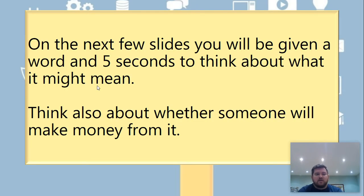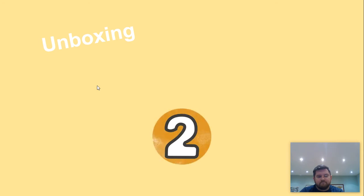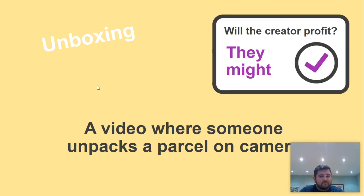On the next few slides I'm going to give you five seconds to think about the definition of each word — you don't have to write it down, just have a think. First: unboxing. An unboxing is a video where someone unpacks a parcel on camera. Do you think people would make money from them? They might — it could be that they're getting sent something for free to unbox. When I say money, it might not be financial; they might be getting free items.